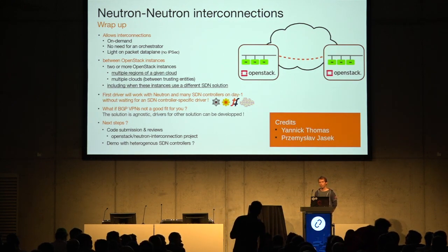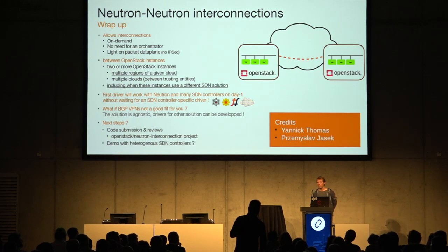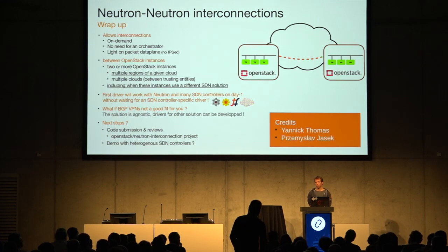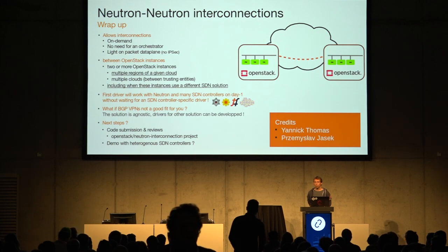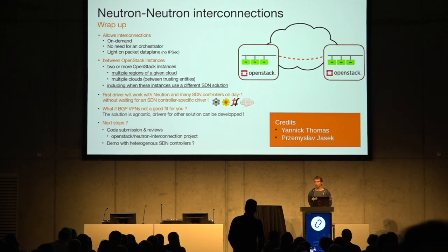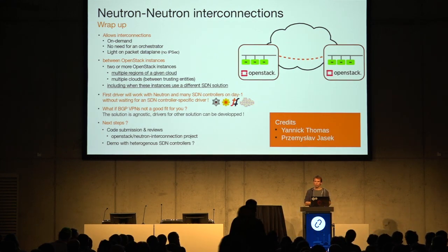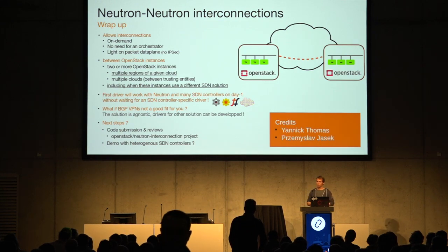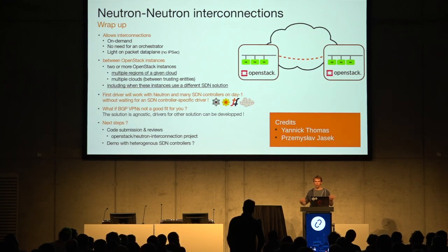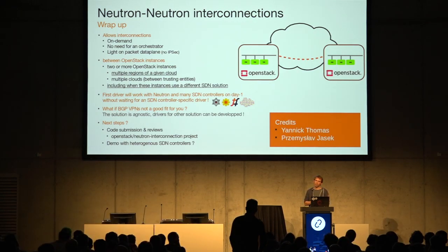Q: Do you have to give credentials of Cloud B to users of Cloud A? A: Not to users — only Neutron needs credentials for one user on the other side with read-only access to interconnection objects. It would typically be a user in a service tenant with a role scoped to only read interconnections. You can have the credentials written in the configuration file. If you have more than two clouds, these credentials could be for a user handled in a federated Keystone.